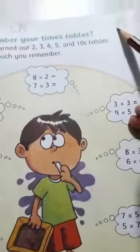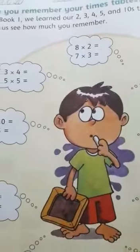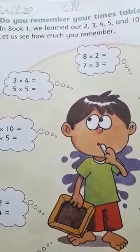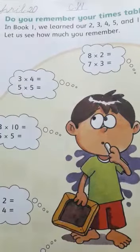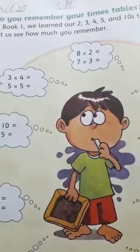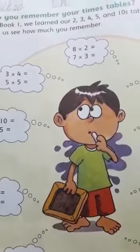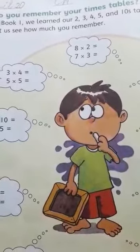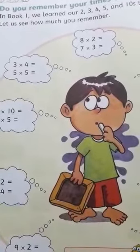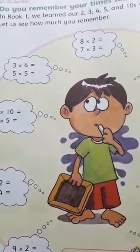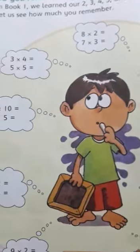So firstly we write date and day. Our date is 3rd April 2020. Then write classwork, and on the right side we write day which is Friday. So class, do you remember your times tables? In Book 1 we learned our 2, 3, 4, 5, and 10 tables. Let us see how much you remember.